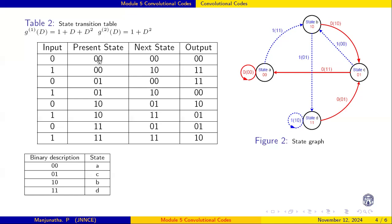When in state A and we give input 0, output is 00 and it stays in state A. When we give input 1, it moves to state B — that is 10 — and output is 11. For state B (representing 10): giving input 0 transitions to state C (01), and giving input 1 goes to state B (10) with output 01.